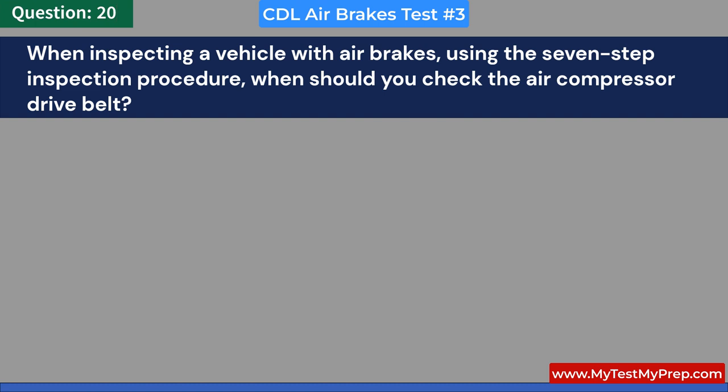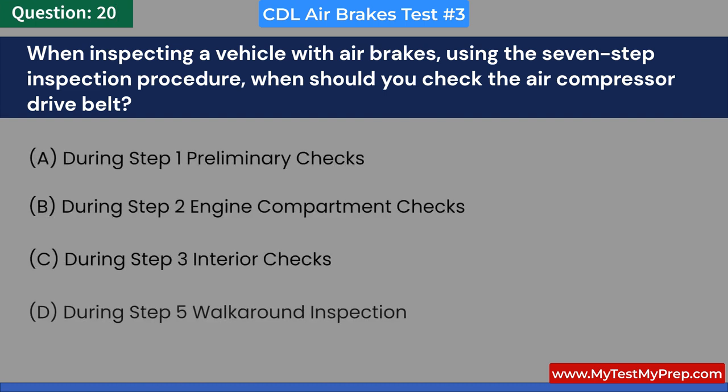When inspecting a vehicle with air brakes using the 7-step inspection procedure, when should you check the air compressor drive belt? A. During step 1 preliminary checks. B. During step 2 engine compartment checks. C. During step 3 interior checks. D. During step 5 walk-around inspection. Answer: B. During step 2 engine compartment checks.